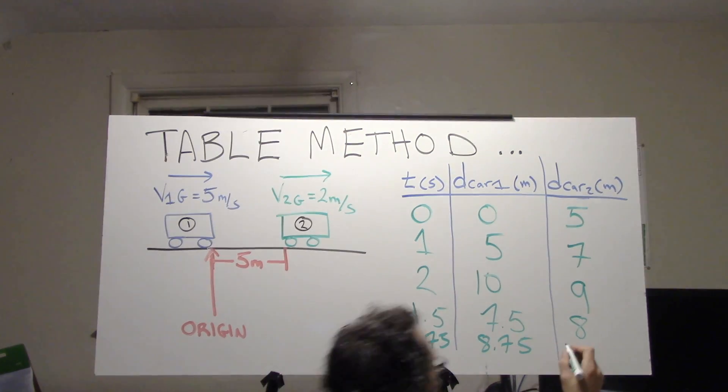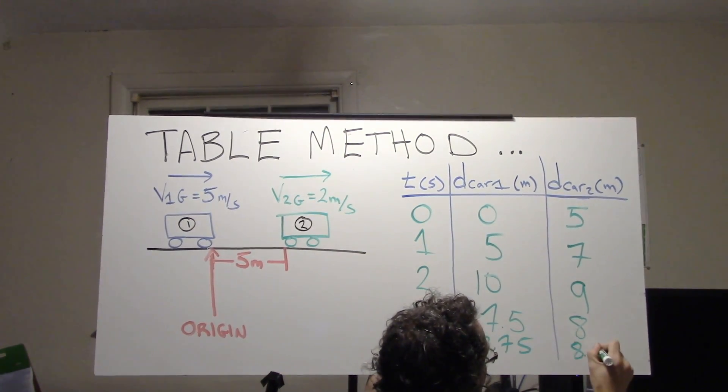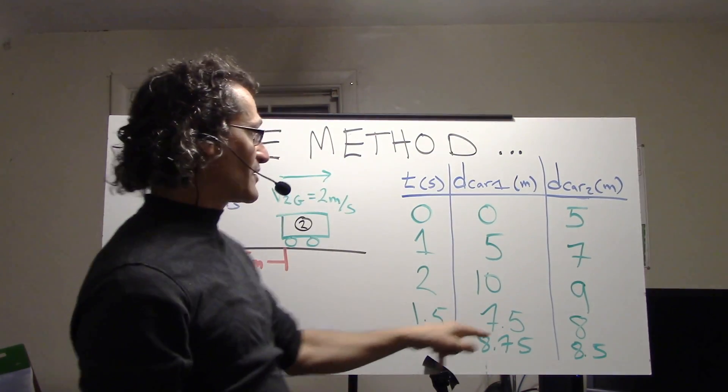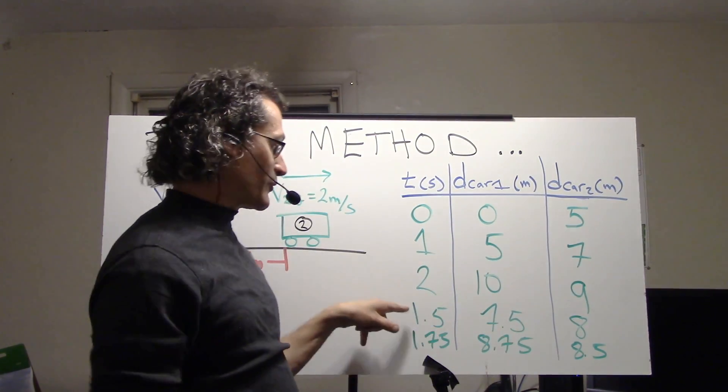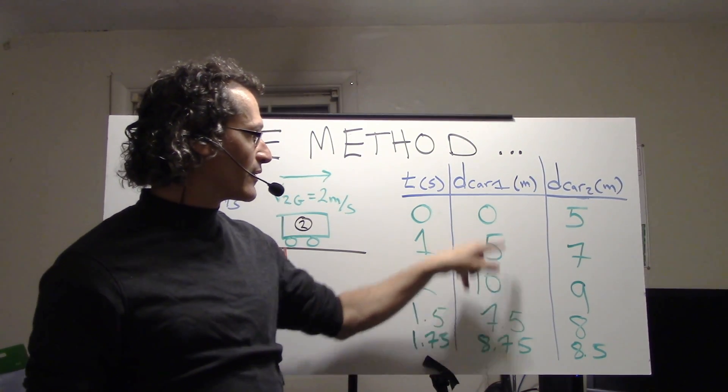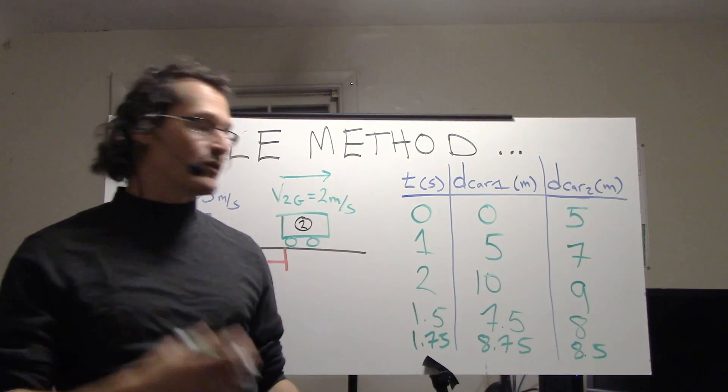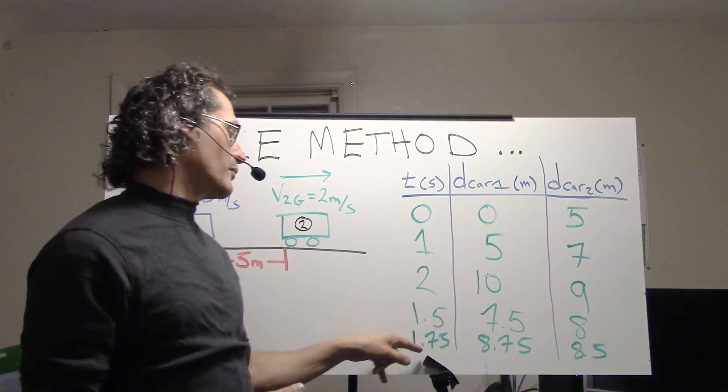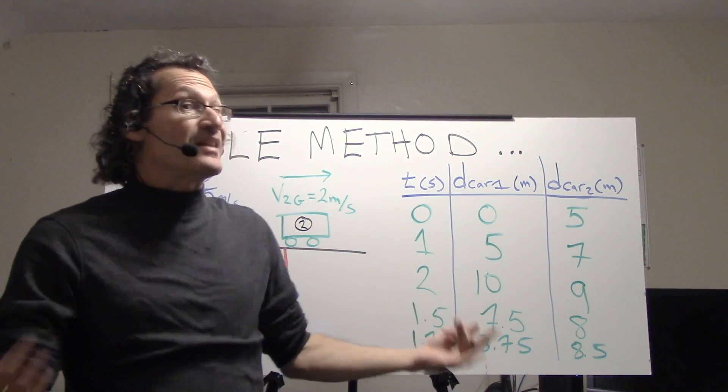So we're getting closer, and the margin's getting closer. This tells us that at 1.75 seconds, car one is in the lead. So somewhere between 1.5 and 1.75 seconds is when car one meets car two. We can do this for a while—we can go to 1.6 and see if that works.